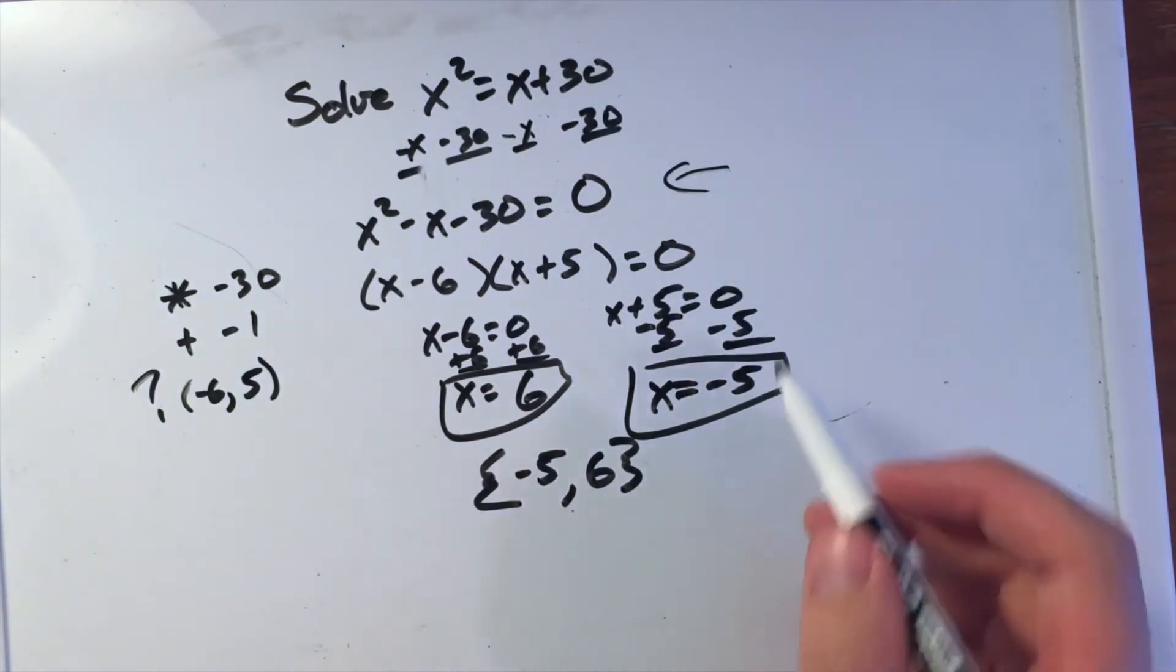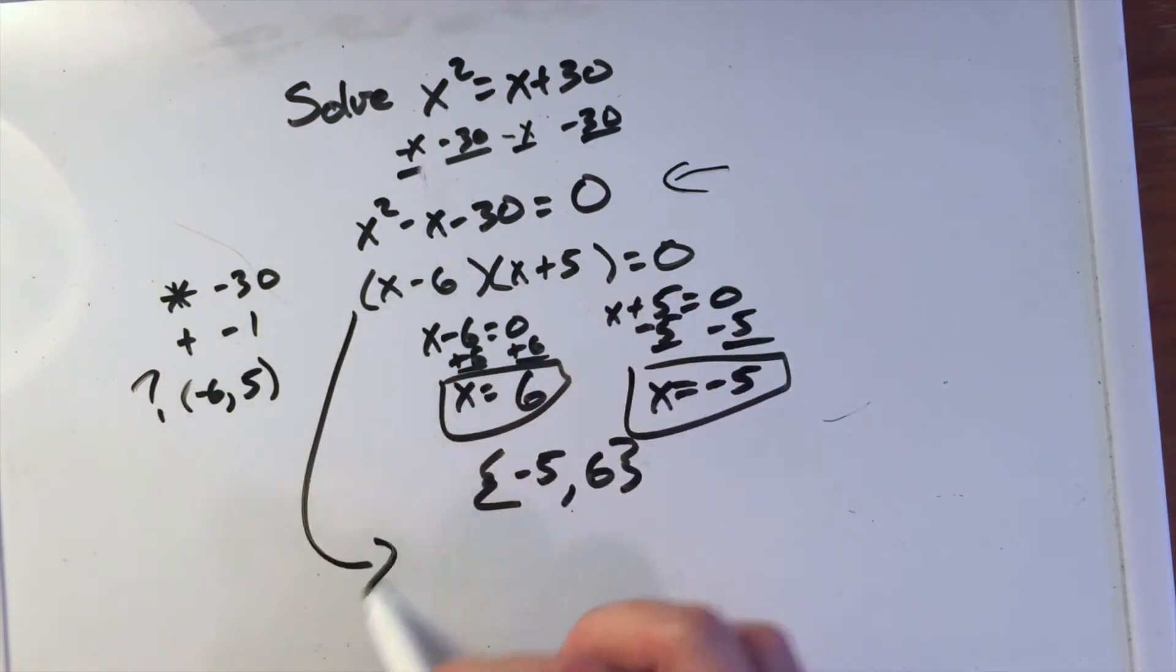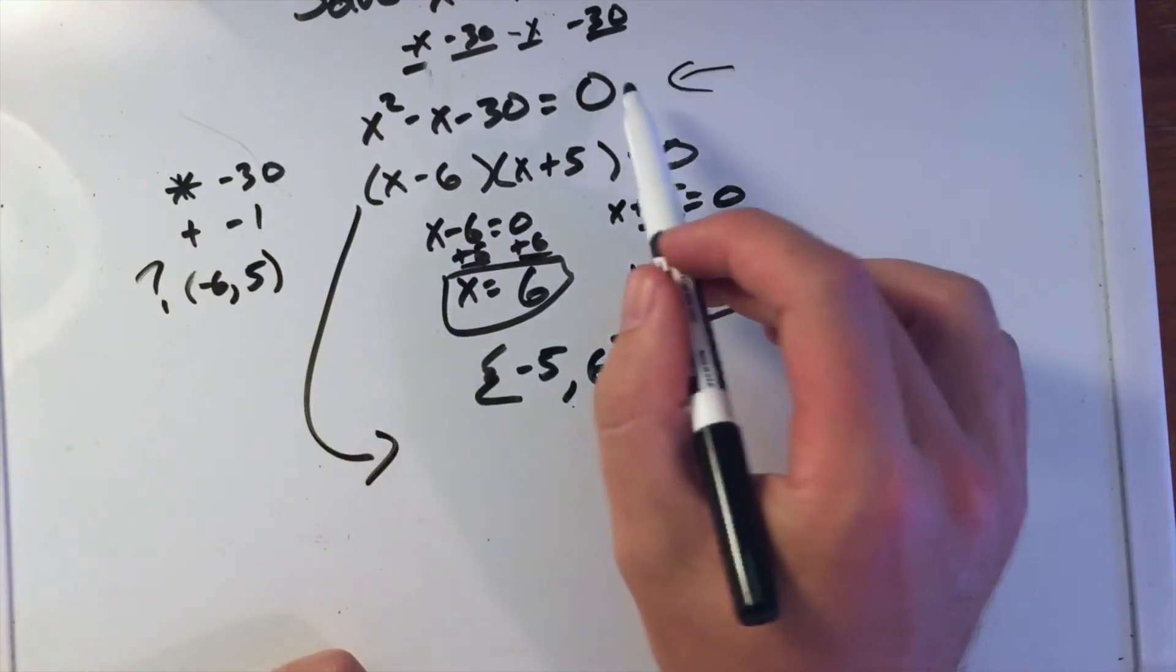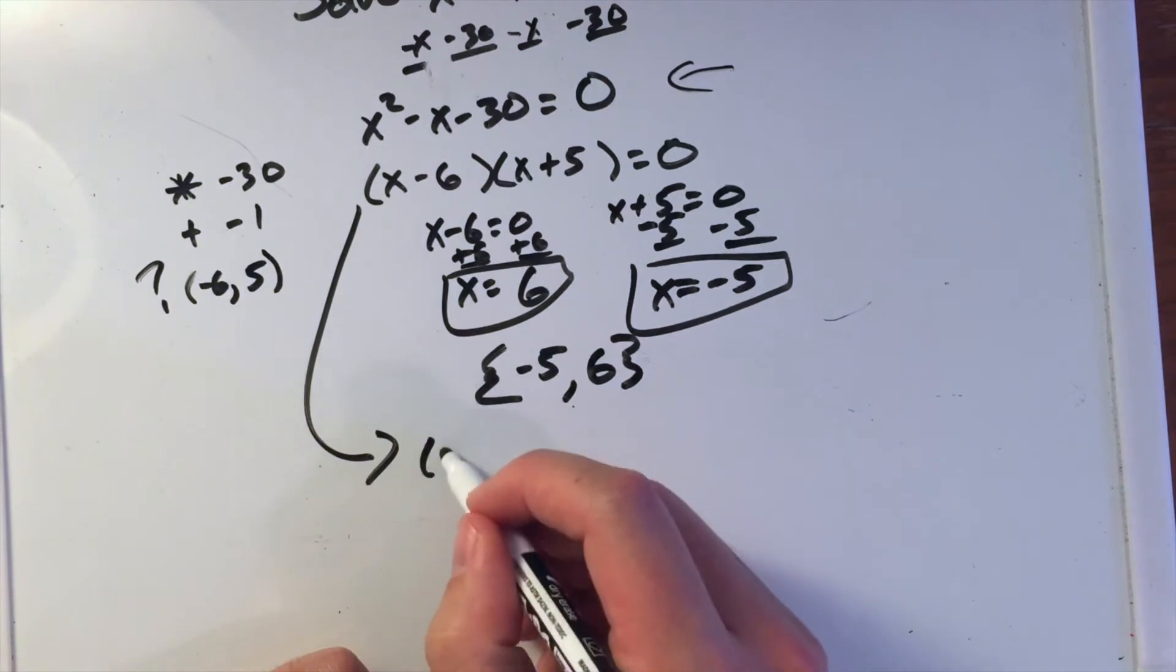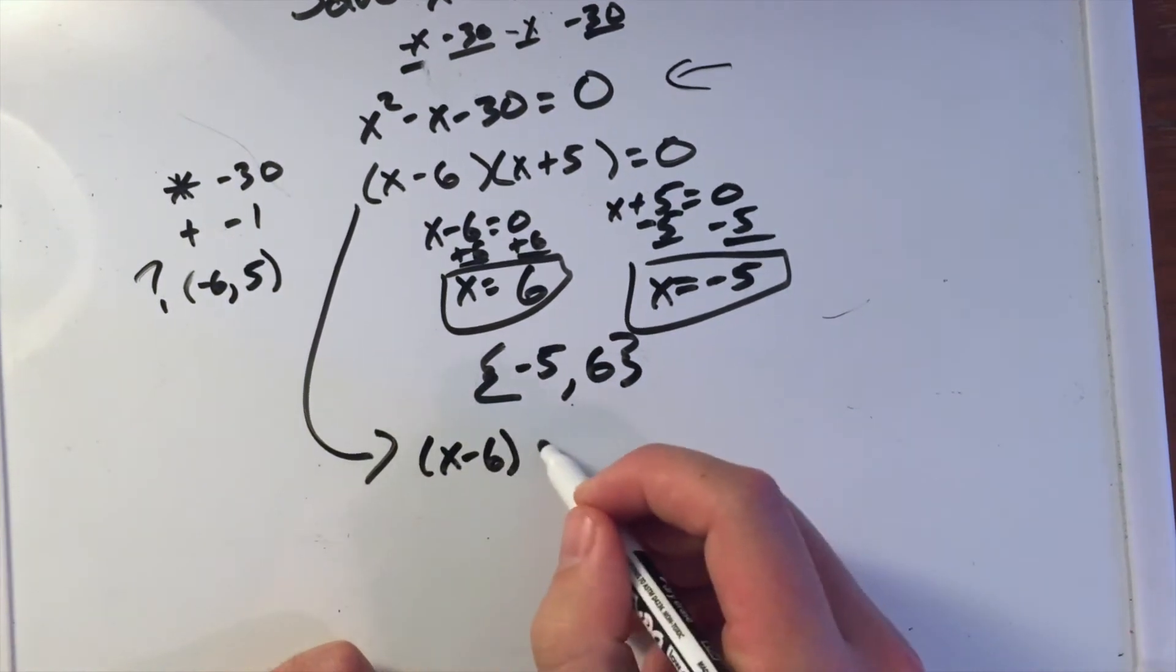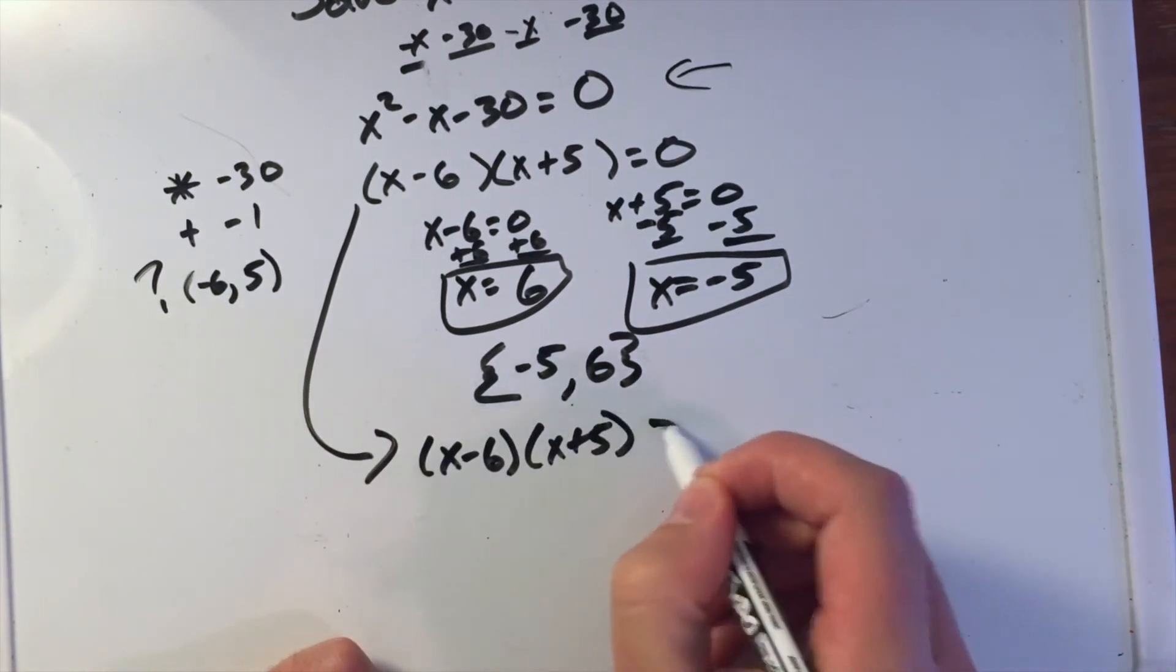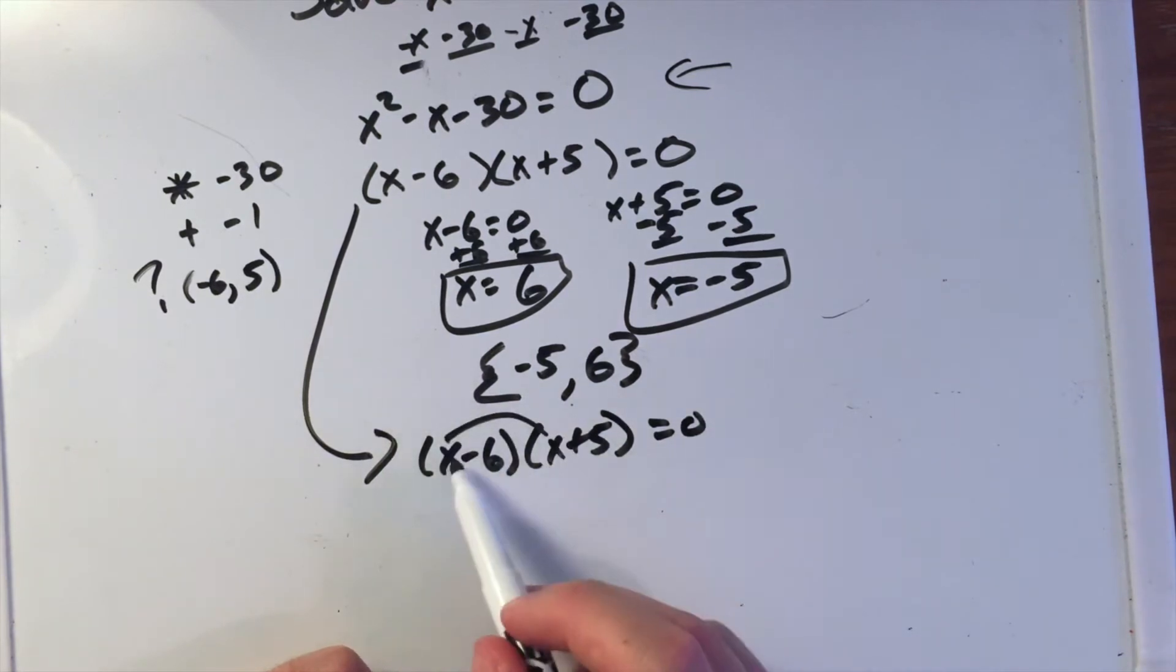But what I want to check here is how do I get back to this equation? Let's foil it back out. My x minus 6, x plus 5 equals 0. We foil that back out. First ones together: x times x is x squared.